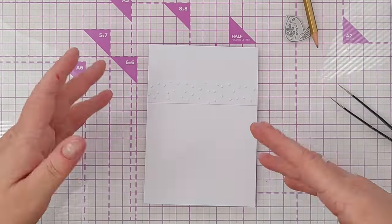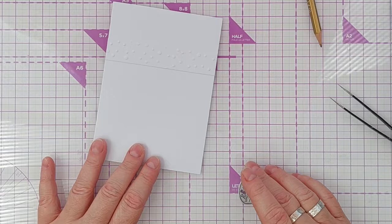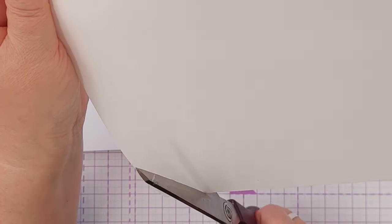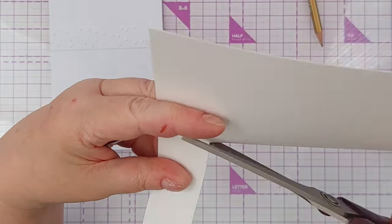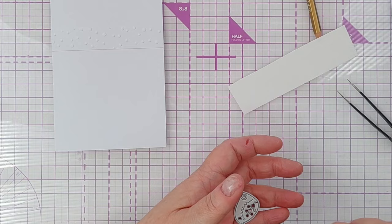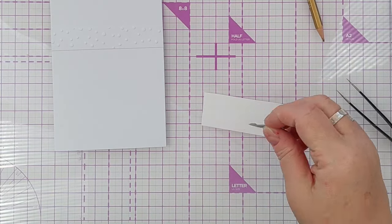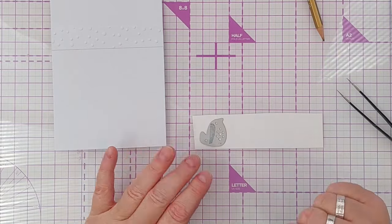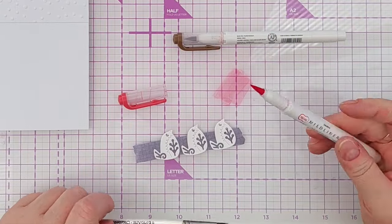Now for our little robins. I've got here some mixed media paper which is a very robust paper that will handle all sorts of different media including watercolor and acrylic. I'm going to cut three little robins.